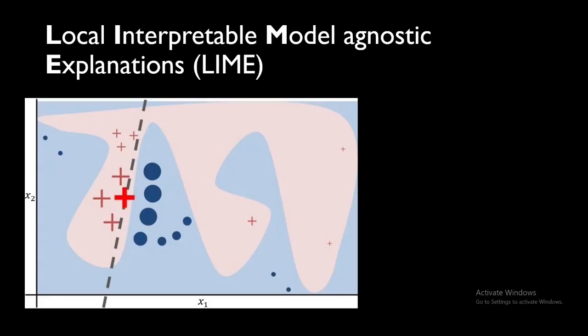From the output of the black box model, LIME fits a simple linear model or a simple decision tree — most of the time just a linear regression model. 'Model-Agnostic' means it does not depend upon what model you are using. As long as you have the input and the output, you can explain any black box algorithm.